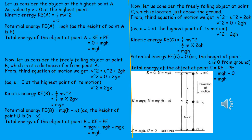Now let us derive and confirm that for a freely falling body the law of conservation of energy holds. We are considering an object at height A, as shown in the figure. At the highest point of its motion, the velocity v is equal to zero, so kinetic energy ½mv² will also be equal to zero. But potential energy at A will be mgh, because the body was lifted to height h. So the total energy of the object at point A is equal to KE + PE = 0 + mgh = mgh.